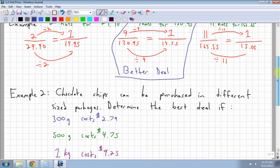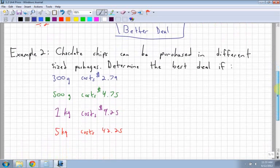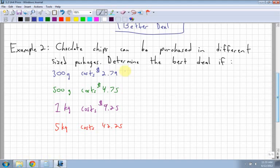Second example. Chocolate chips can be purchased in different sized packages. It says determine, again, determine the best deal. If 300 grams costs $2.79, 500 grams costs $4.79, 1 kilogram costs $9.25, and 5 kilograms costs $42.25.